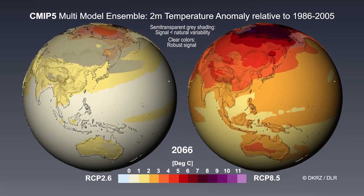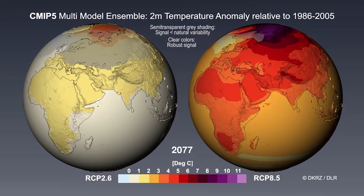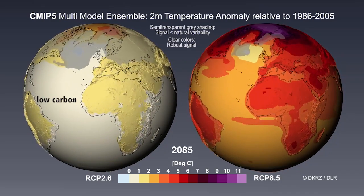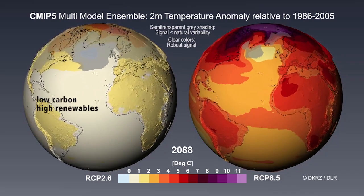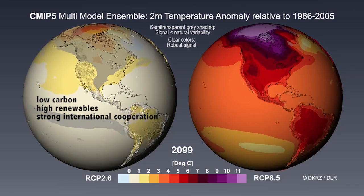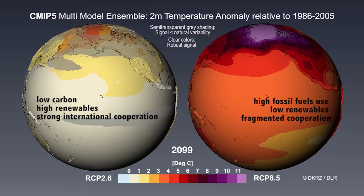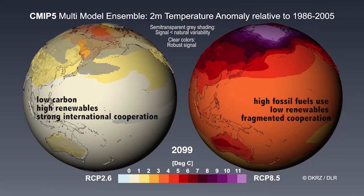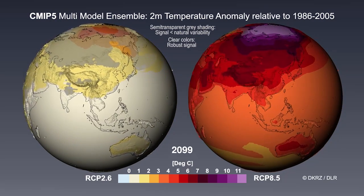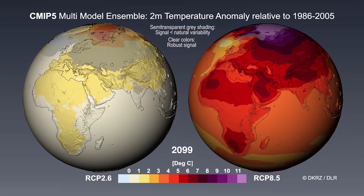We still have some uncertainty, but the models clearly show us two different futures. On the left, we see an optimistic future with low carbon, high renewables, and strong international cooperation. On the right, we see high fossil fuel use, low renewables, and fragmented cooperation — sort of business as usual. The CMIP models show us our very clear choices for future climate.